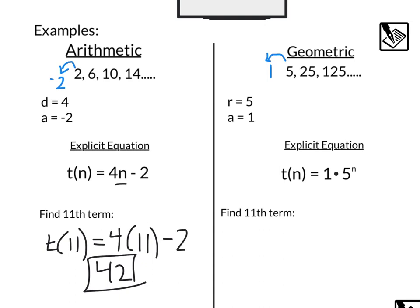For our geometric sequence, we want to find the 11th term, do the same thing. t(11) is going to equal 1 times 5 to the 11th power, and I'm going to have to break out my calculator for this one. And that looks like it's going to be 48,828,125. That's 1 times 5 to the 11th power.